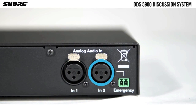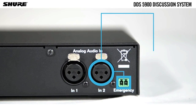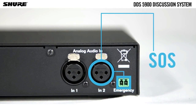Analogue input 2 can be used in combination with the emergency input. Only if the emergency circuitry is closed, input 2 becomes active and distributes, for example, a pre-recorded emergency announcement. The emergency announcement would route to all outputs of the system.